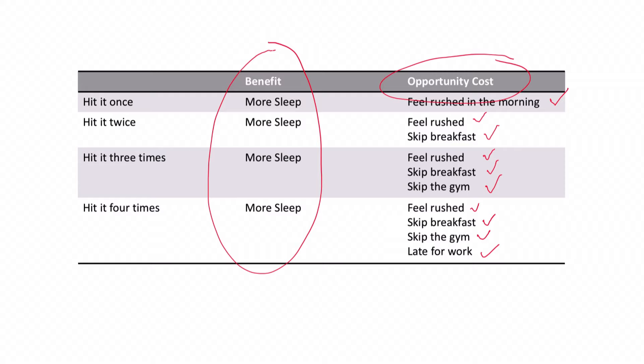What's important to note is that opportunity costs may be subjective, and they may differ depending on the situation. For example, for someone working in the afternoon, hitting the snooze button early in the morning is not as costly as for someone who has to go to work first thing in the morning. For someone hitting the snooze button on a Saturday morning, they don't necessarily have to be somewhere at a specific time, so the benefits of more sleep may outweigh all of these costs. Opportunity costs are subjective, and they may differ depending on the situation.